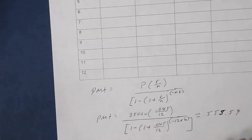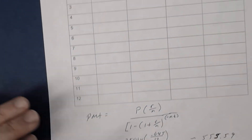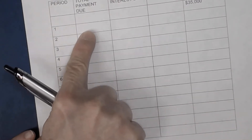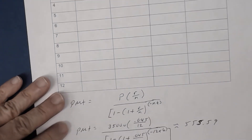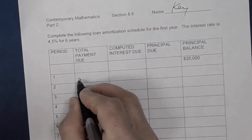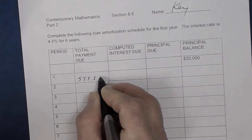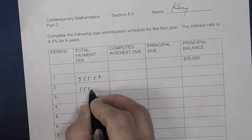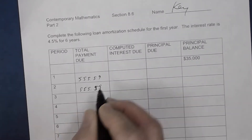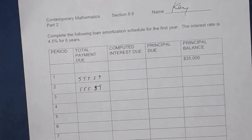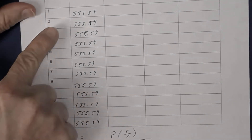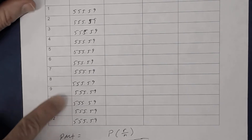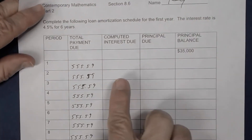So $555.59 is your monthly payment. All along the first year, the total payment due each month will be $555.59, and I've gone ahead and placed that value in all the monthly payment cells.